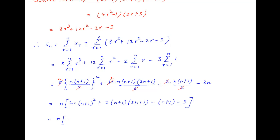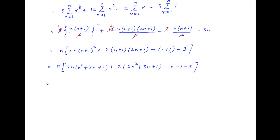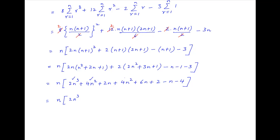This is equal to N times: expanding 2N(N + 1)² as N² + 2N + 1, the second term as 2(2N² + 3N + 1), and the remaining terms as −N − 1 − 3. Expanding further: 2N³ + 4N² + 2N + 4N² + 6N + 2 − N − 4, which simplifies to N times (2N³ + 8N² + 5N − 4), giving the required sum of the given series to N terms.